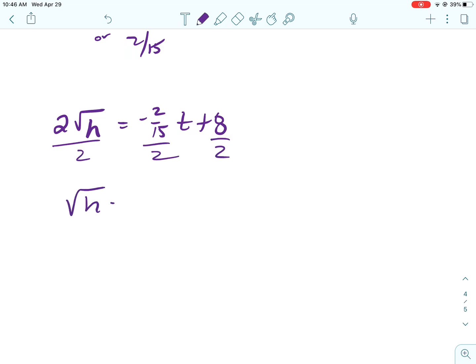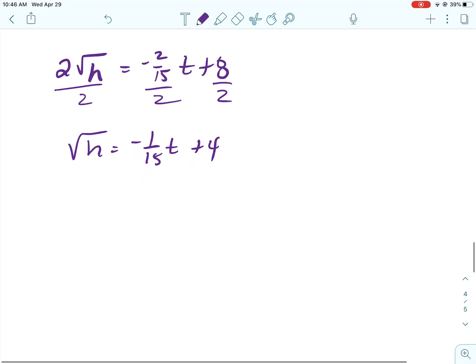So now I'm going to go back to where I drew that arrow and put that in for K. So to solve for H, I would divide by 2. So 2 fifteenths divided by 2 is 1 fifteenth. And then to get rid of a square root, I'm going to square. And don't forget that.